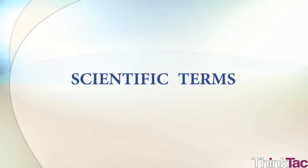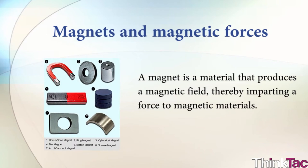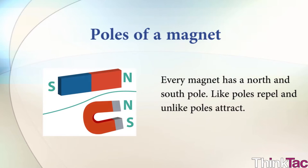Some scientific terms to familiarize yourselves with: magnets and magnetic forces. A magnet is a material that produces a magnetic field, thereby imparting a force to magnetic materials. The poles of a magnet — every magnet has a north and south pole. Like poles repel and unlike poles attract.